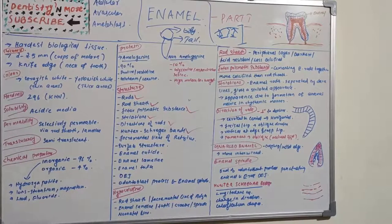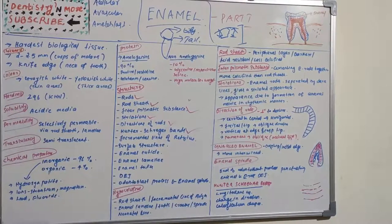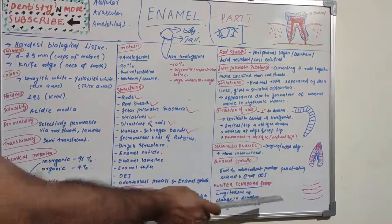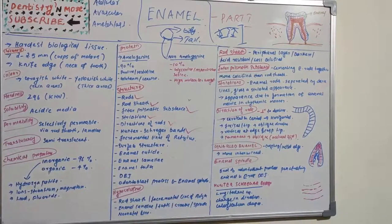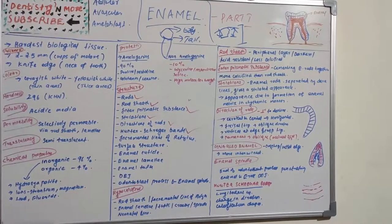Hunter-Schreger bands are not merely an optical phenomenon — they are composed of alternate zones having slightly different permeability and different content of organic material. By contrast, nulled enamel is an optical appearance of intertwined bundles of rods at the incisal cusp and incisal edge. Hunter-Schreger bands appear as alternating white and dark bands of varying width.